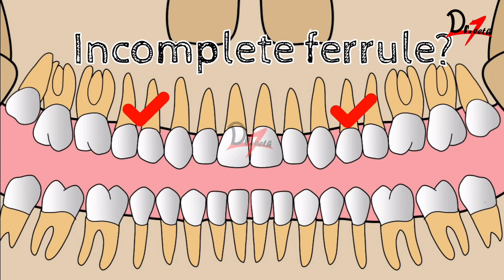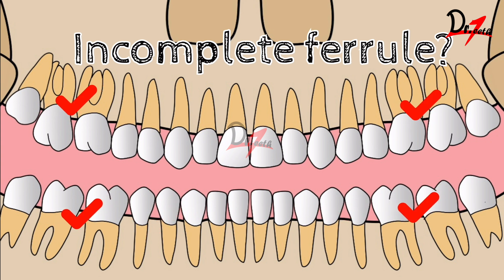For maxillary premolars, considering canine-guided occlusion and mutually protected occlusion — where most teeth on one side touch during lateral movement — ferrule on the buccal and palatal aspects is important; mesial and distal are less critical. For mandibular premolars, the buccal wall ferrule is most important. For molars, maximum forces are in the vertical direction with an additional buccal-lingual force component during lateral movement, so buccal and lingual or palatal walls are most important; proximal walls are less critical though better to have.